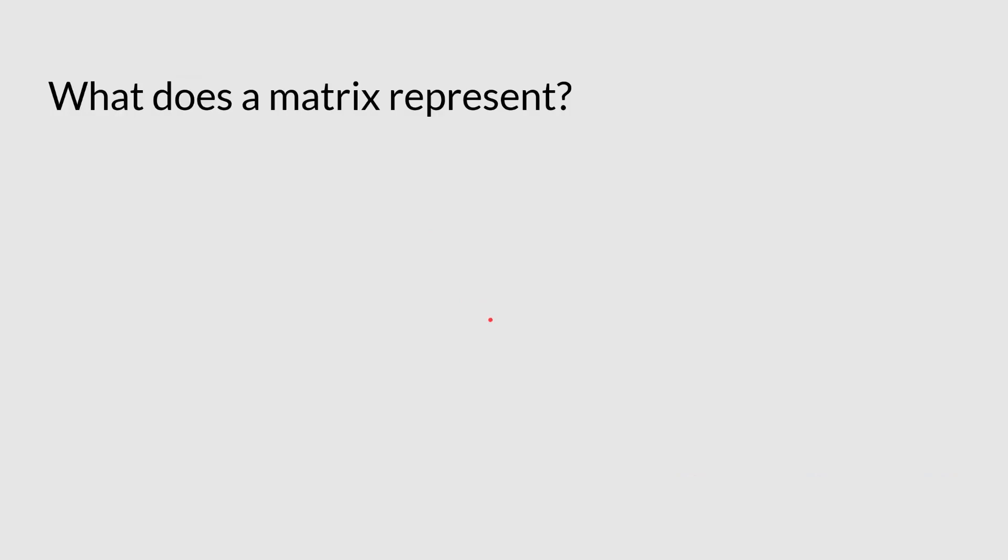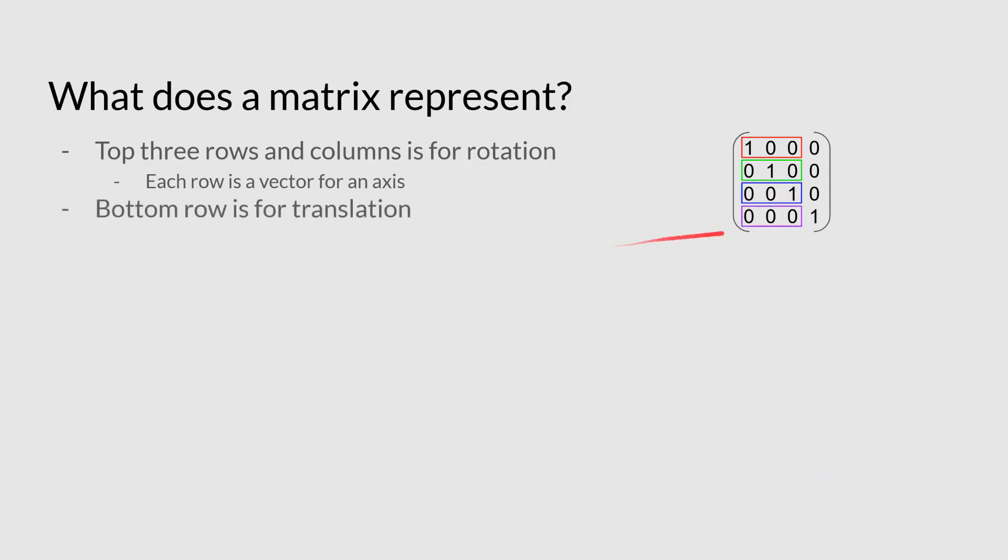So what does the matrix actually represent? Well, the top three rows is basically representing rotation. So you might also hear in some places talking about a 3x3 matrix, and that would basically be what they're talking about then. A 3x3 matrix will store rotations. Now each of the rows is a vector. So this would be your vector for the x-axis, this would be your vector for the y-axis, and this is your vector for the z-axis. And the bottom row is used for translation. That's basically why a 3x3 matrix can define rotation but it can't define translation, because we need that fourth row.